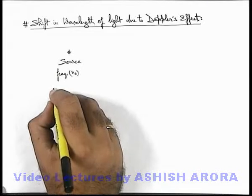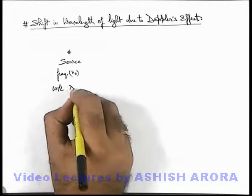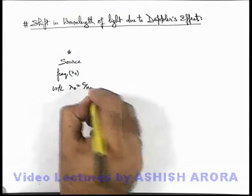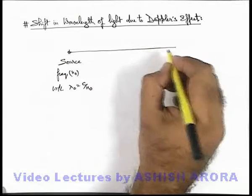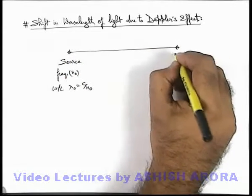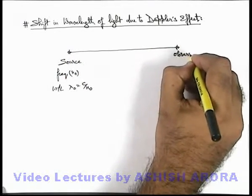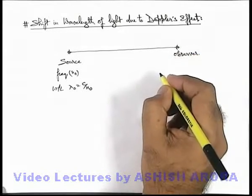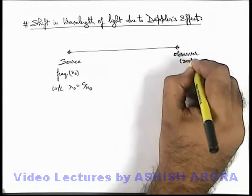Of which the actual wavelength can be written as lambda knot, which is c by n knot. And say the source is producing light which is propagating towards an observer or detector, and we treat observer to be at rest.